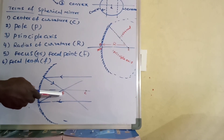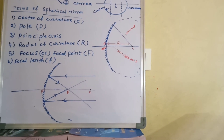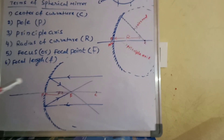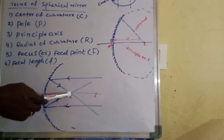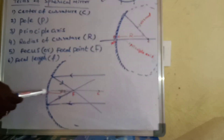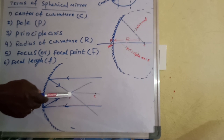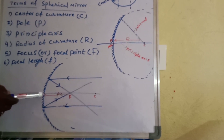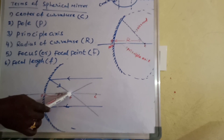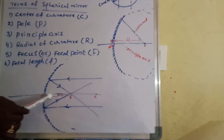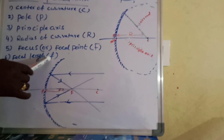The focal point is generally denoted by capital F. Next term is focal length. The distance between the focal point and the pole is called focal length. Focal length is generally denoted by small f.